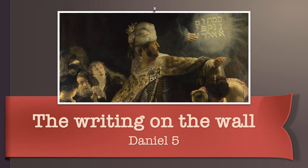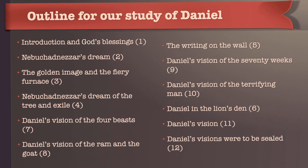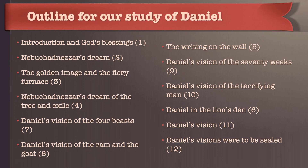Keep in mind that in Daniel chapter 5, we are still in an Aramaic section of the text rather than a Hebrew section. That doesn't change back until the vision section, as we saw earlier. This is the outline we're using for this particular study of Daniel, and we're trying to do this in chronological order, as best as I can determine. This particular lesson we are on chapter 5, the writing on the wall.